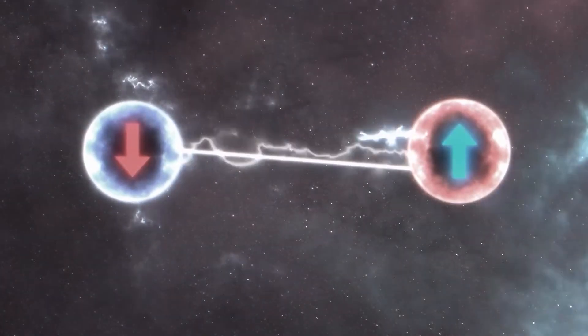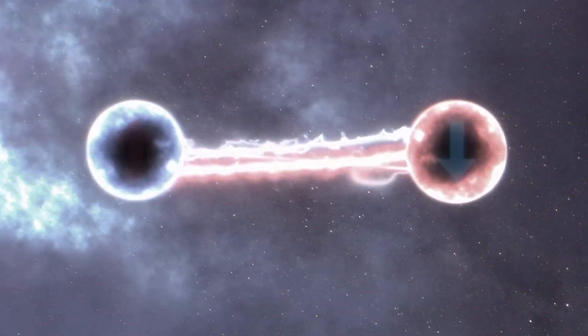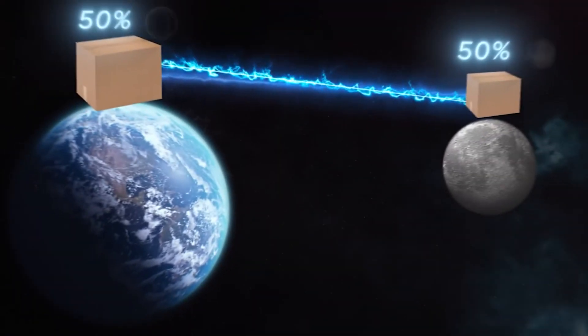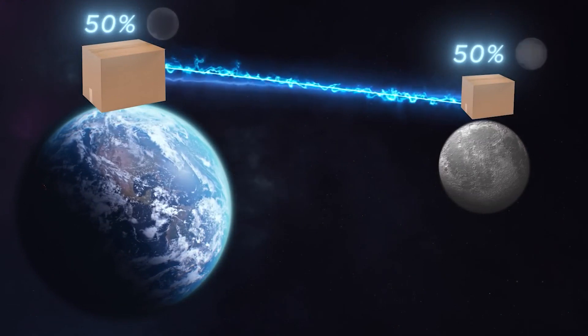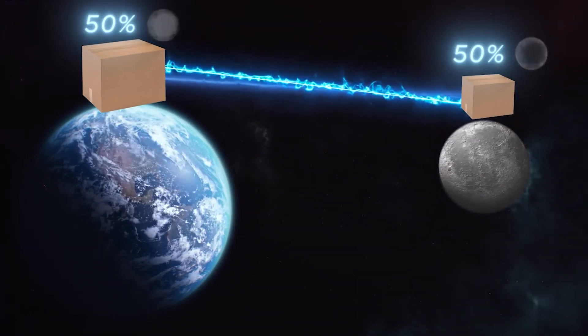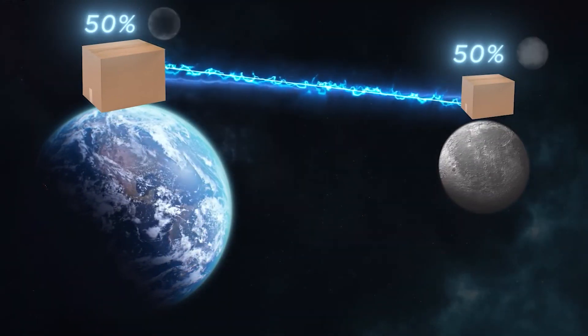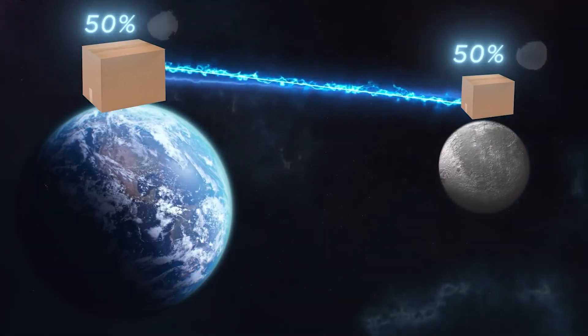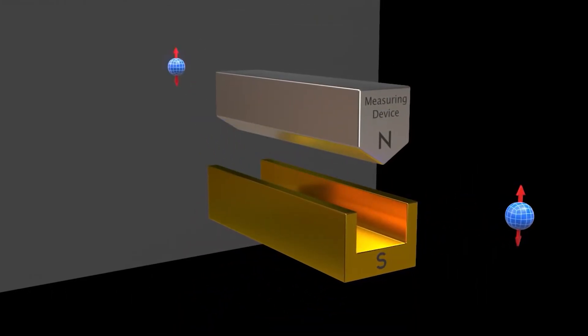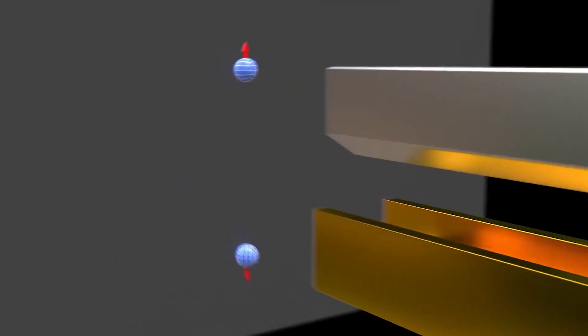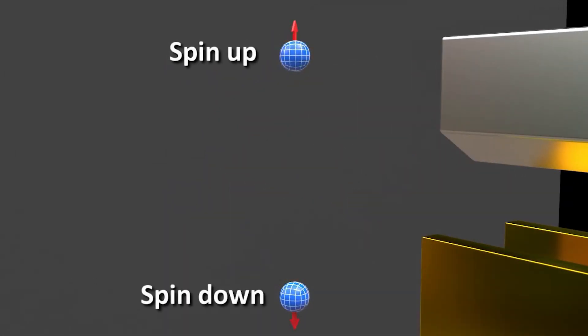Another interesting view is the quantum entanglement experiments at CERN. Quantum entanglement is a quantum physics phenomenon in which two or more particles become linked so that the state of one particle is inherently coupled to the state of another, regardless of their distance. This means that even if they are separated by large distances, measuring or manipulating one particle instantly influences the state of its entangled partner.